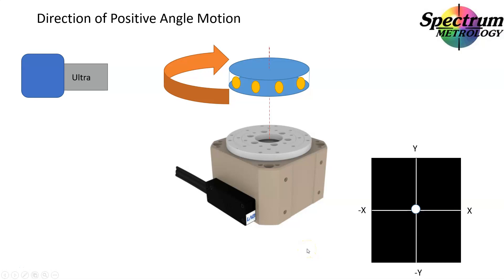It is very important when making any measurement to understand the sign convention. Here when the table rotates clockwise, that is a positive angle motion.